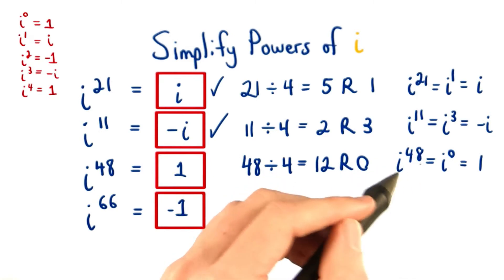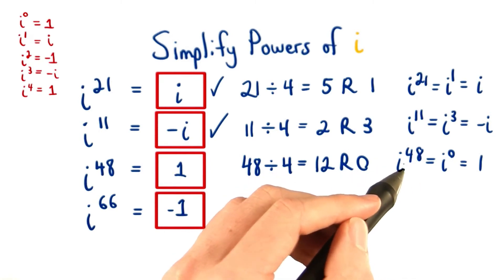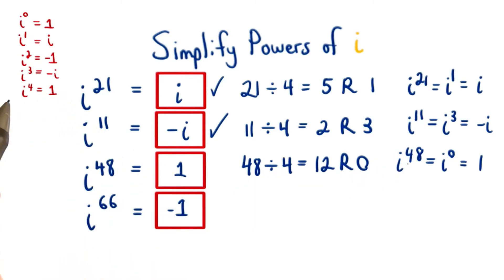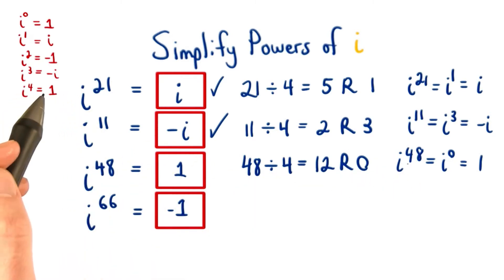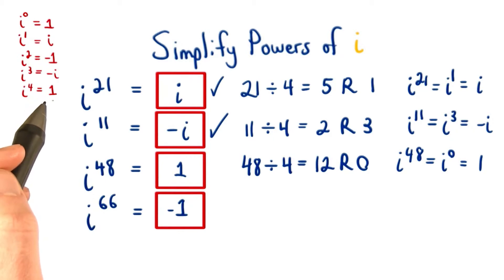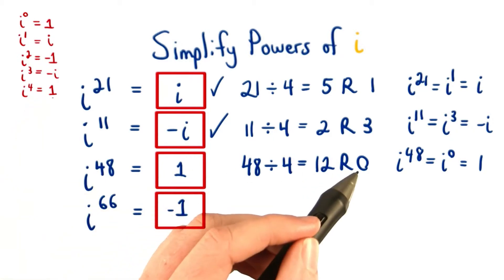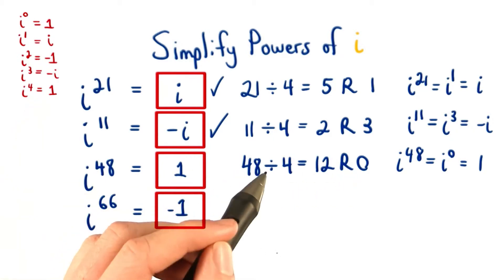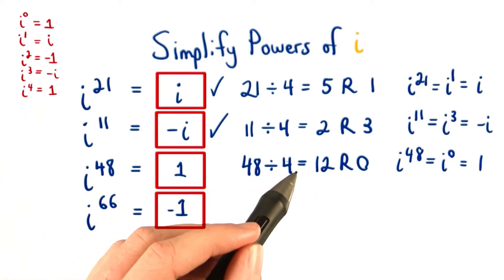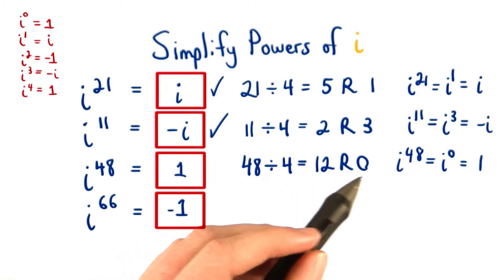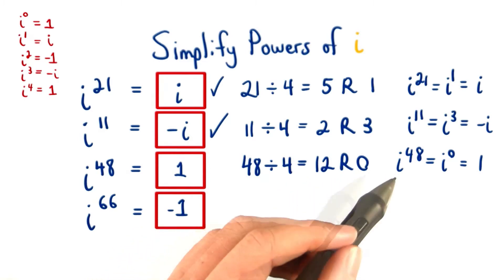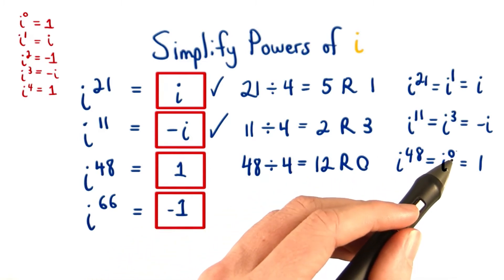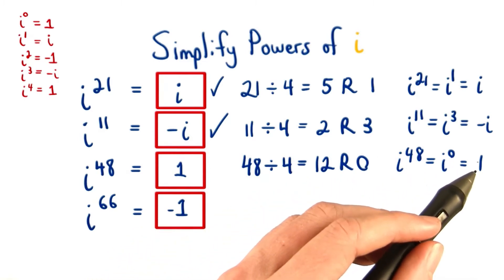Since i to the 48th is a multiple of 4, we end up on a power of i to the 4th, which is really just 1. When thinking about it with a remainder, we know 48 divided by 4 equals 12 remainder 0. i to the 48th is equal to i to the 0, which equals 1.